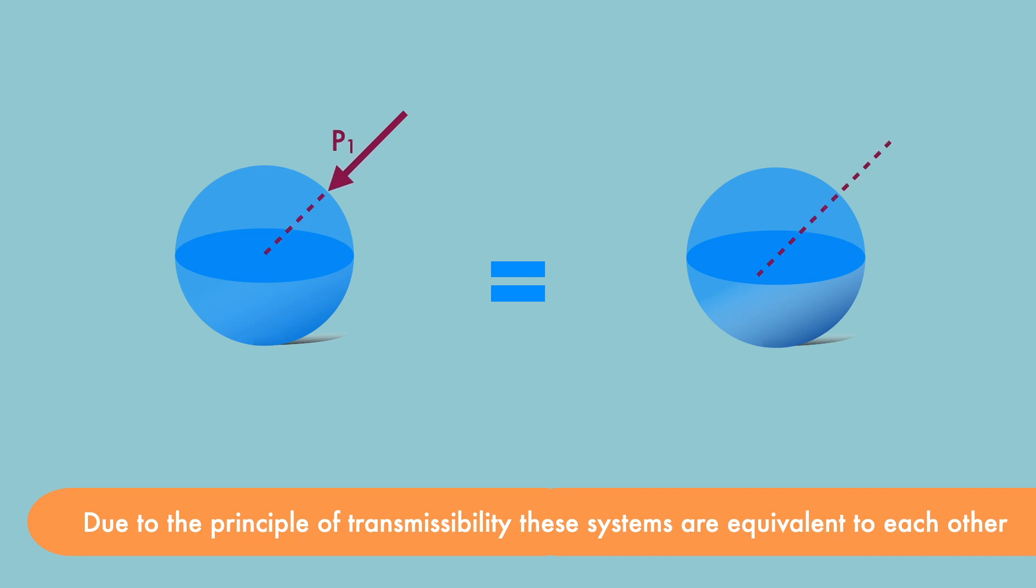In the first scenario, all three forces appear to be approaching the ball from distinct directions, whereas in the second situation, the forces appear to be pulling the ball away in their respective directions. Importantly, the lines of action of the forces are the same in both cases.